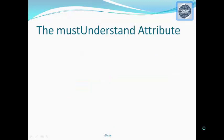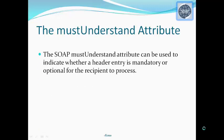SOAP defines three attributes in its default namespace: must understand, actor, and encoding style. The SOAP must understand attribute can be used to indicate whether a header entry is mandatory or optional for the recipient to process. If you add a value of 1 to a child element of the header element, it indicates that the receiver processing the header must recognize that element. If the receiver does not recognize the element, it will fail when processing the header.